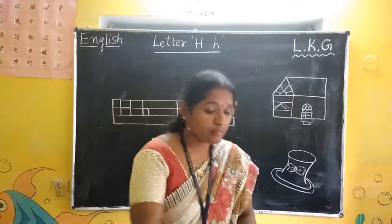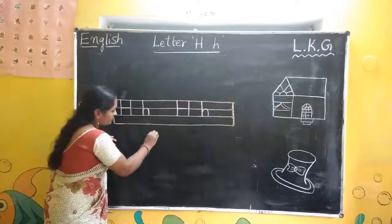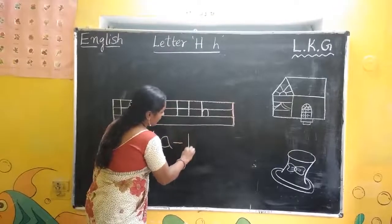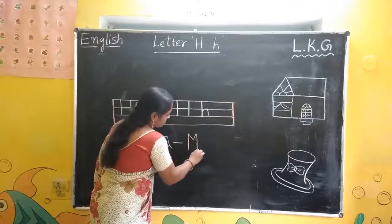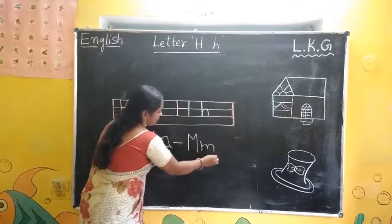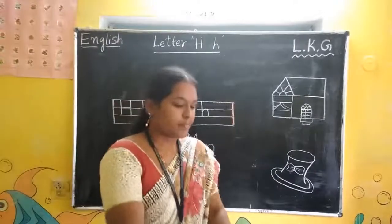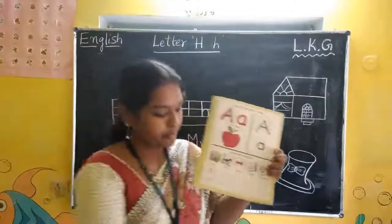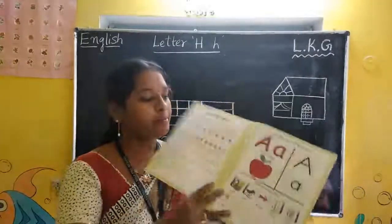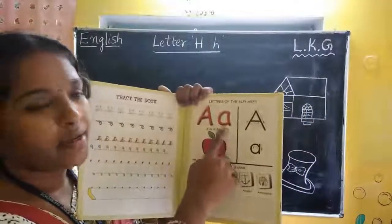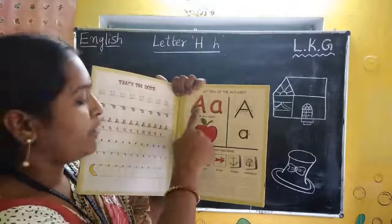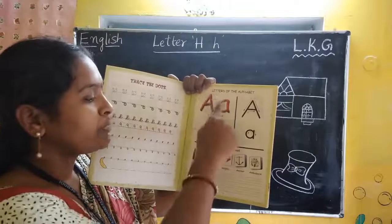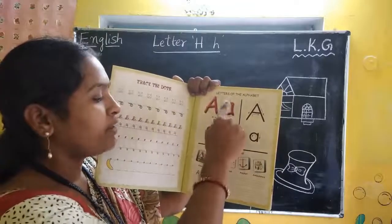Picture ready. Capital A, small A, to capital M and small M. Picture ready. Take out your textbook, page number 5. Let's start, children. Say loudly. Capital A, small A. A for apple, A for axe, A for ant, A for arrow, A for anchor, A for ambulance.